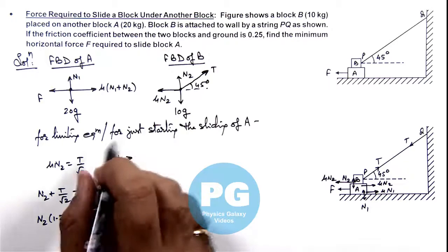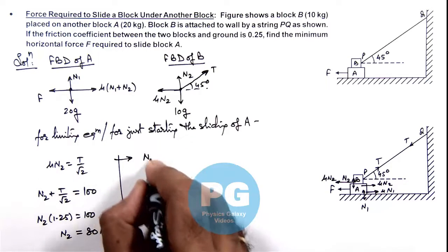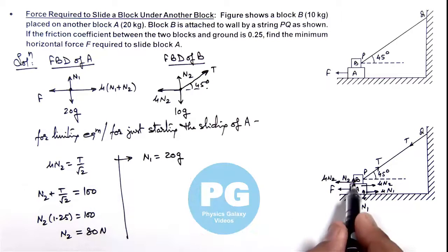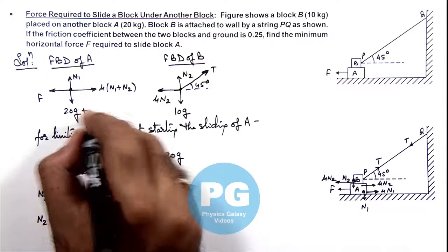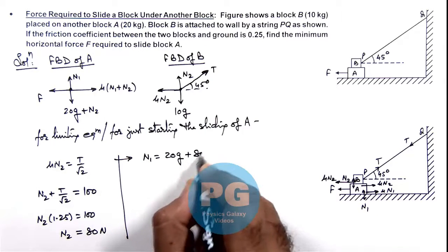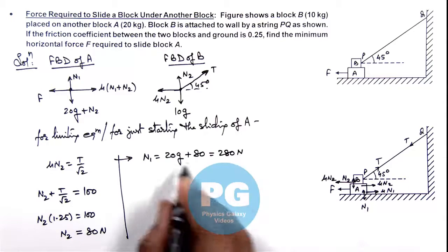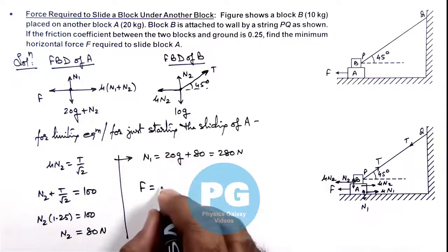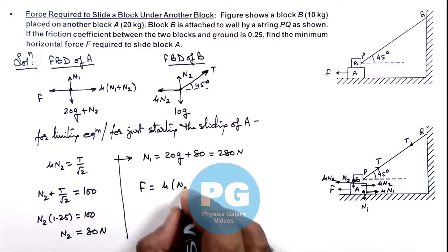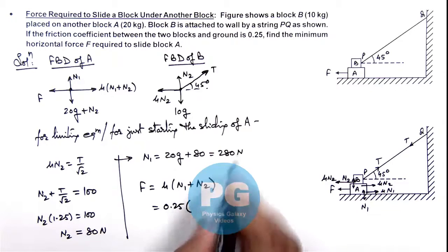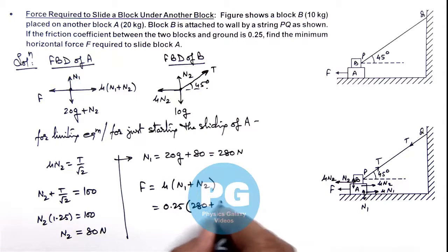Now we calculate N1. The normal reaction from the ground on block A supports the weight of A (20g) plus the reaction from block B (N2), so N1 equals 20g plus N2 equals 200 plus 80, which is 280 newtons, taking g equals 10. Now that we know N1 and N2, the minimum force required to slide block A is mu times (N1 plus N2), which is 0.25 multiplied by (280 plus 80).